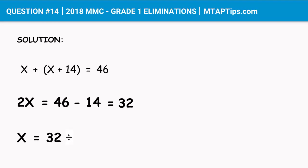So 32 divided by 2 is equal to 16. So the answer is 16. There are 16 adults in the bus.